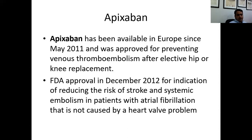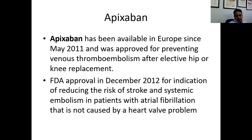Moving on to the second Factor Xa inhibitor — apixaban — which I tend to prefer using in my patients when I have a choice. Apixaban has been available in Europe since May 2011, initially approved for preventing venous thromboembolism after elective hip or knee replacement. The FDA granted approval in December 2012 for reducing the risk of stroke and systemic embolism in patients with atrial fibrillation not caused by a heart valve problem.